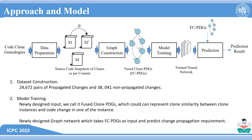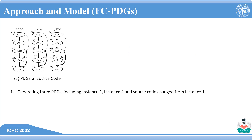At the same time, we design a graph network based on relational graph convolution network. It takes FCPDG as input and outputs the change propagation requirement. FCPDG is constructed as follows. For a clone pair together with the changes in one instance, we have two pieces of source code of the clone pair, and one piece of code that stands for the clone instance after being changed. We transform each piece of code into a PDG, and thus we have three PDGs.